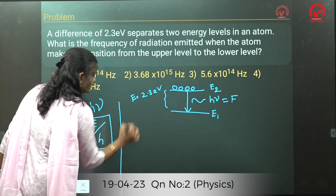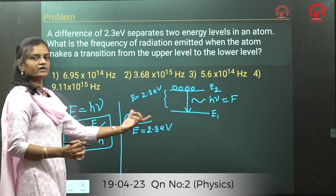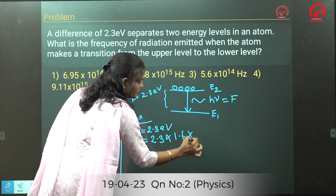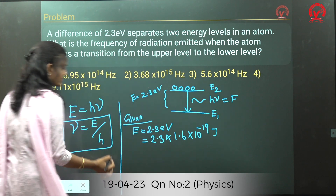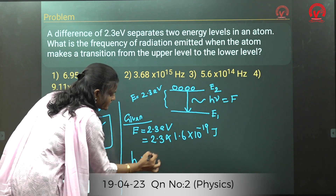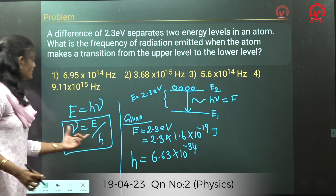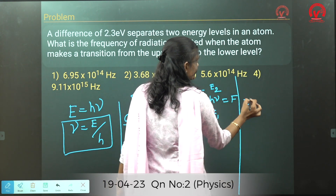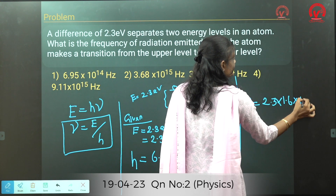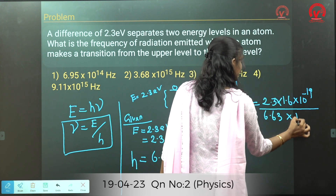The given value is E = 2.3 electron volts. Always convert electron volts to joules by multiplying by 1.6 × 10⁻¹⁹. H is Planck's constant, which is 6.63 × 10⁻³⁴. Substituting: ν = (2.3 × 1.6 × 10⁻¹⁹) / (6.63 × 10⁻³⁴).